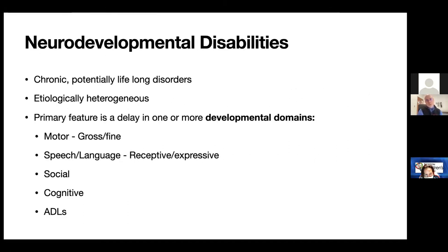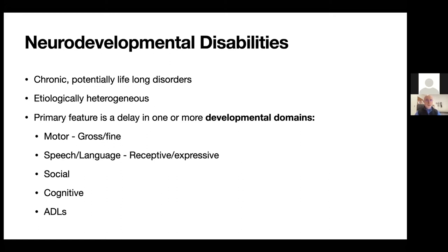Neurodevelopmental disabilities are chronic, potentially lifelong disorders, and etiologically heterogeneous — they could be due to prematurity, meningitis, malformation of brain development, or genetic abnormality. The primary feature for a child with a neurodevelopmental disability will be delays in one of the main five domains: motor (either gross or fine), speech or language, social, cognitive, and ADLs.